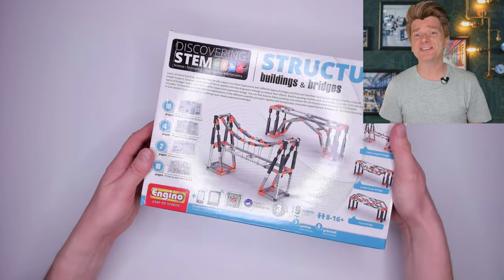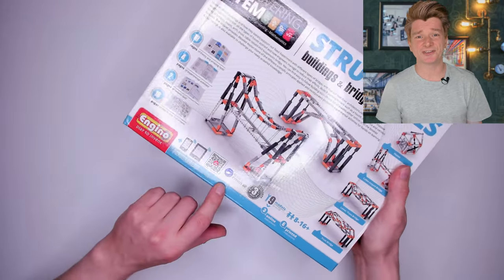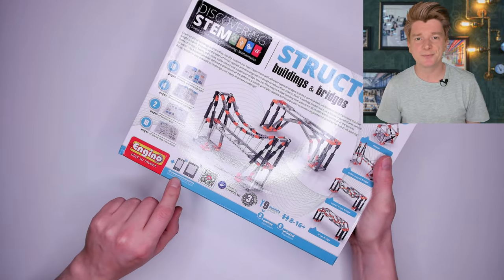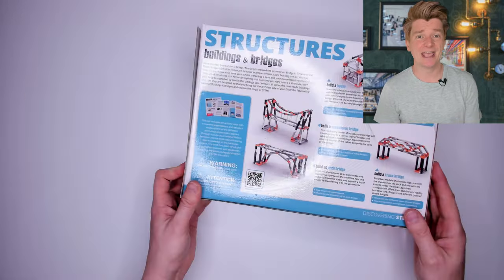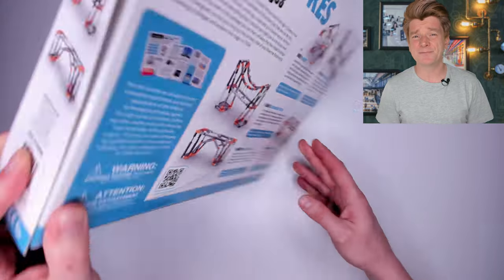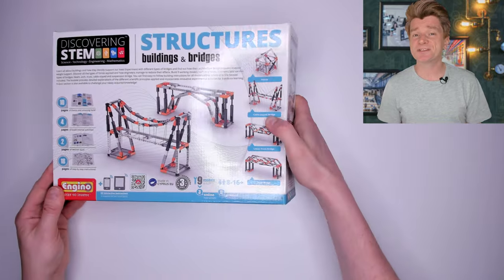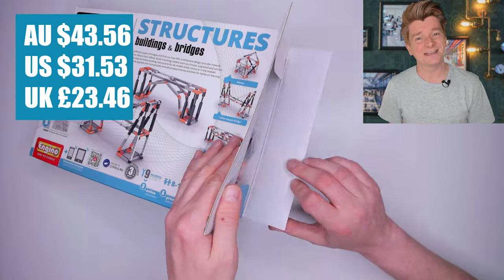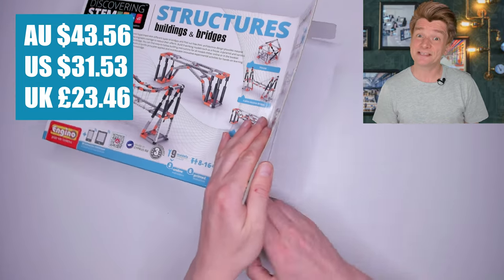Right, next up Ngino Discovering STEM Structures, Constructions and Bridges, super long name but this kit looks super fancy and it was quite a bit more money than the simple kit we just looked at. The cost was $43.56, let's see if it's as good.